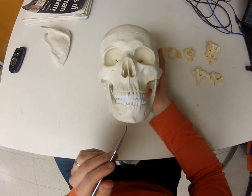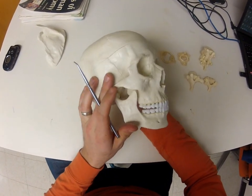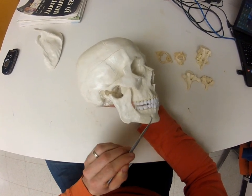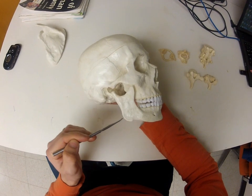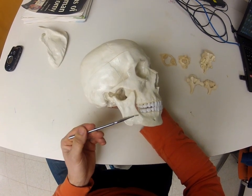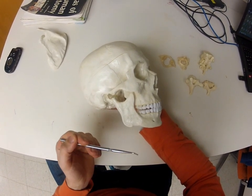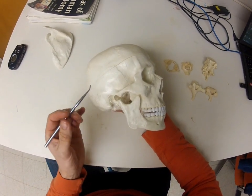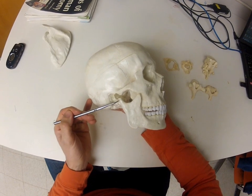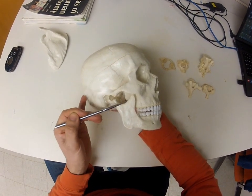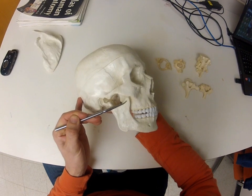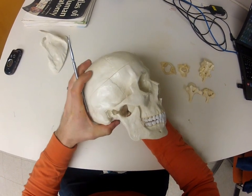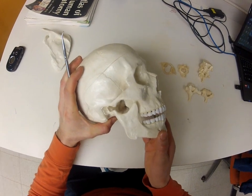Moving down onto the mandible, this point on the front is called the mental protuberance. Here's the body of the mandible, and this corner is called the angle of the mandible. The projection going superiorly is the ramus of the mandible, which splits into two processes: the more posterior condyloid process and the more anterior coronoid process. The condyloid process is what the jaw pivots on.